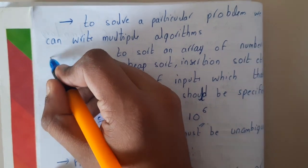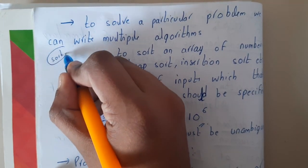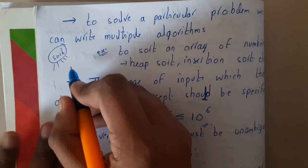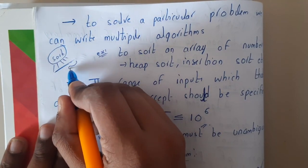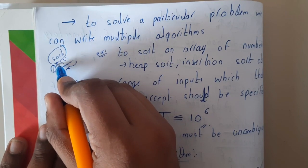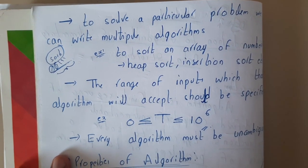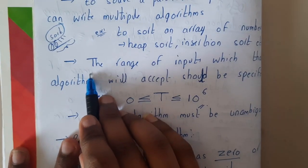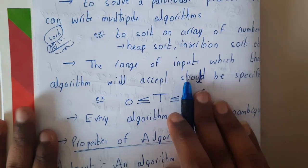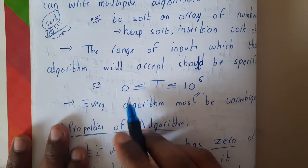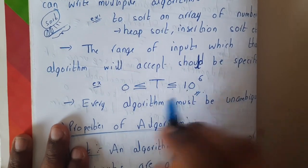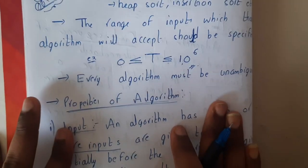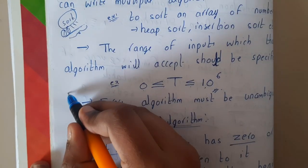To solve a particular problem we can write multiple algorithms. For example, for sorting we have many algorithms — heap sort, insertion sort, bubble sort, and many more. Each one has a particular advantage: one will be faster, one will be easier on unsorted arrays, one harder on sorted arrays. Each has its own pluses and minuses depending on the inputs. Also, the range of inputs an algorithm accepts should be specified — for example, between zero and less than 10 to the power of 6.